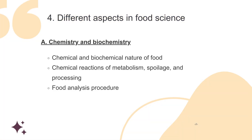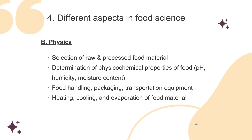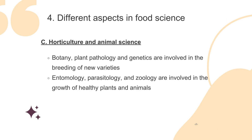The first aspect is chemistry and biochemistry. It involves the chemical and biochemical nature of food, chemical reactions of metabolism, spoilage and processing, as well as food analysis procedures. The second aspect is physics. It involves the selection of raw and processed food material, determination of physico-chemical properties of food, food handling, packaging, transportation equipment, as well as heating, cooling and evaporation of food material.